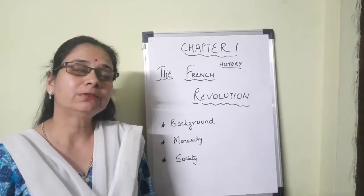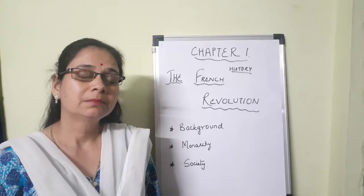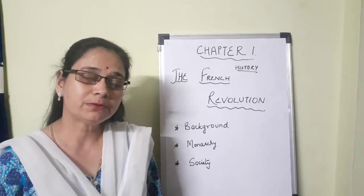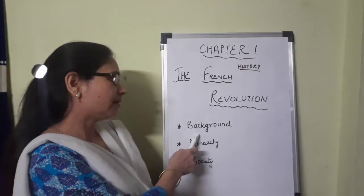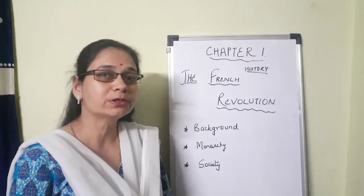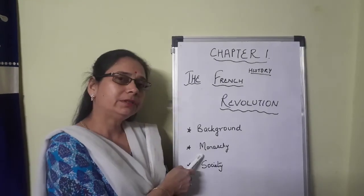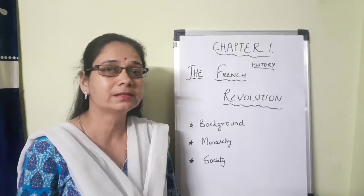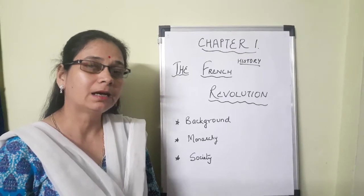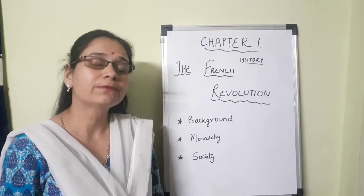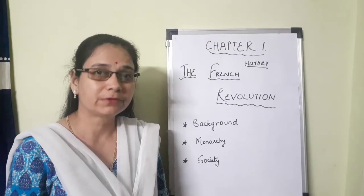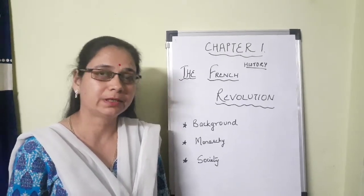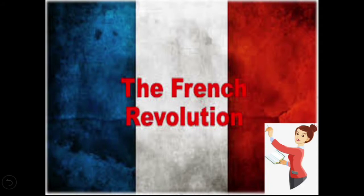You might not have heard about the French Revolution. What was it? It was a great change which took place in France. So we are going to discuss today about the background — why did the French Revolution take place. And then we will study about monarchy, the rule of king, and about society. What was the condition of society in France? Even in France the society was divided into three parts. So let's start with the explanation.